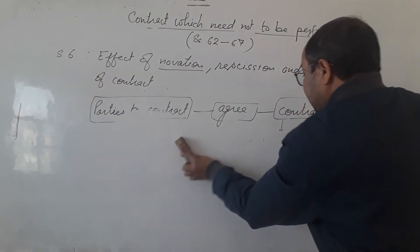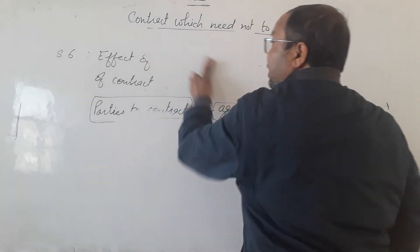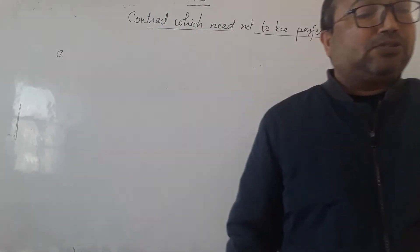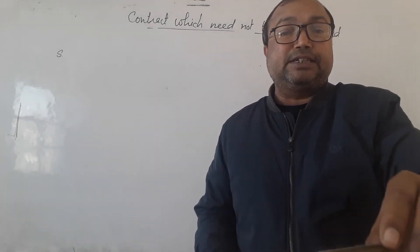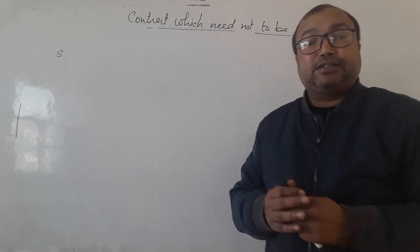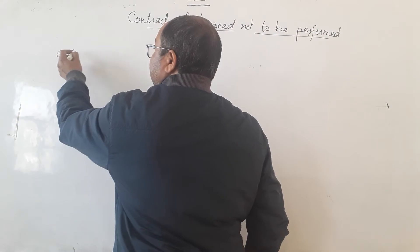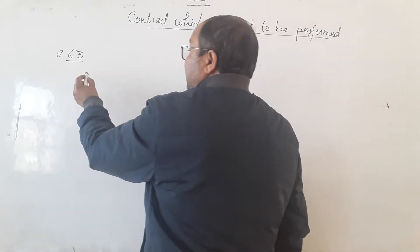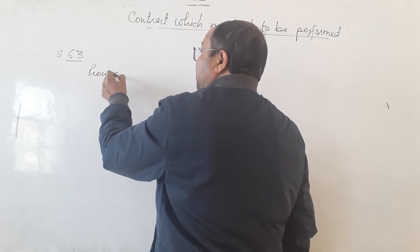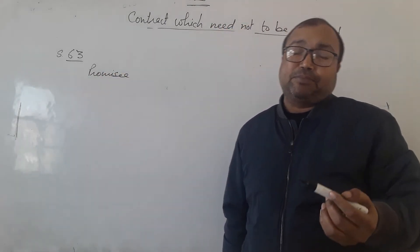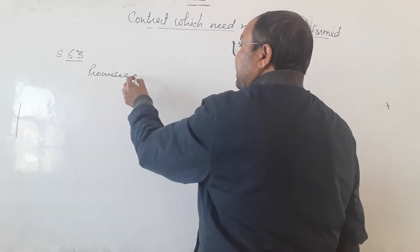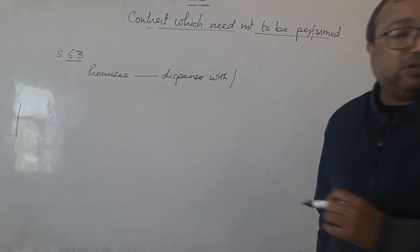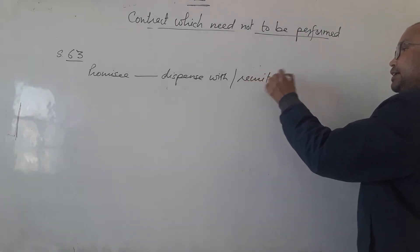Section 63 — we have covered this earlier as an exception to consideration. I had listed 6 exceptions, and Section 63 was one of them. Section 63 says that a promisee may dispense with or remit the performance of the promise made to him, or any part of it.